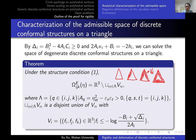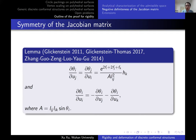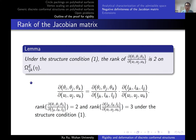The second step is to prove the negative semi-definiteness of the Jacobian matrix on a triangle. By the chain rule, we write the Jacobian matrix as the product of two matrices. The rank of the first is two and the rank of the second is three under the structure condition, verified by direct determinant calculation. Thus the Jacobian matrix has two non-zero eigenvalues and one zero. The problem reduces to finding a good point where the Jacobian matrix has negative eigenvalues.